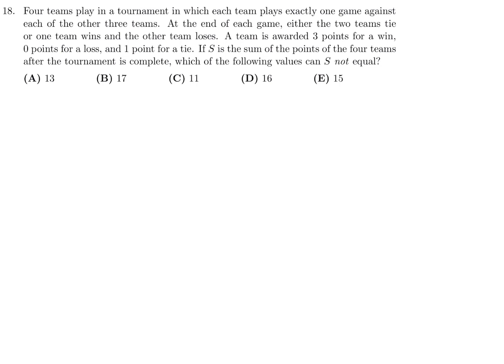Four teams play in a tournament in which each team plays exactly one game against each of the other three teams. At the end of each game, each of the two teams tie or one team wins and the other team loses. If a team is awarded three points for a win, zero points for a loss, one point for a tie. If S is the sum of the points of the four teams after the tournament is complete, which of the following values can S not equal? Well, we have four teams. A, B, C, and D. So we have six games, right? A plays B. A plays C. A plays D. B plays A, but that's already counted. B plays C. B plays D. And then C plays D. Six games.